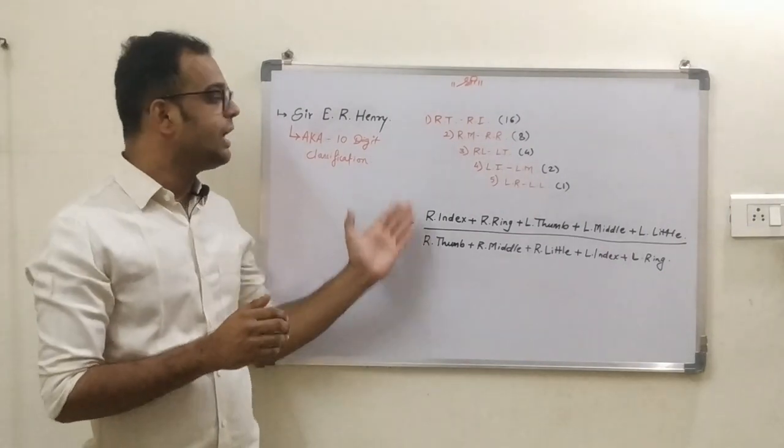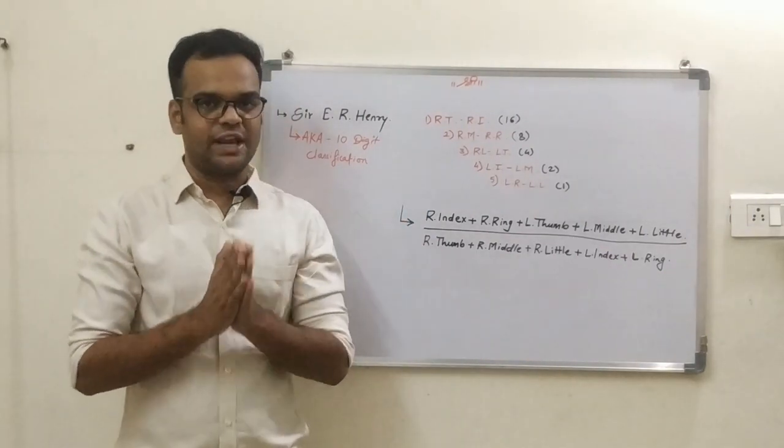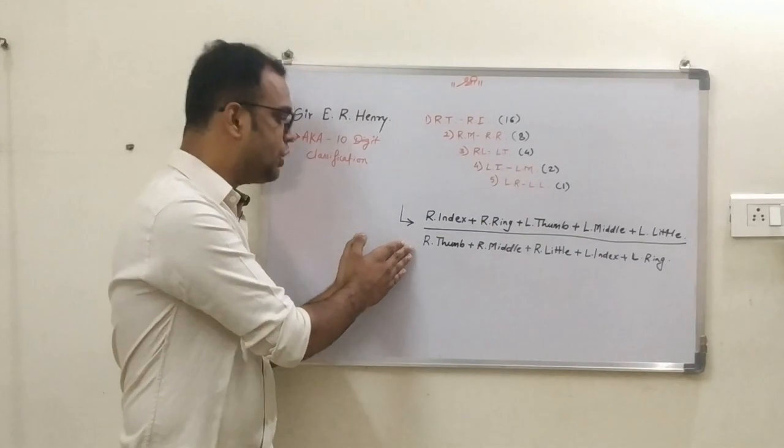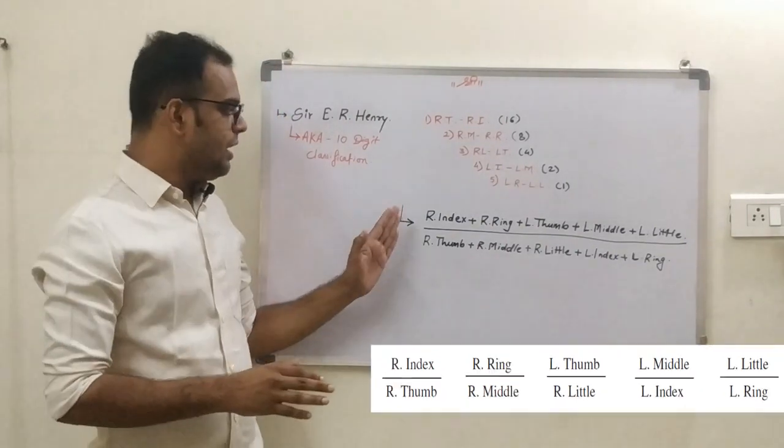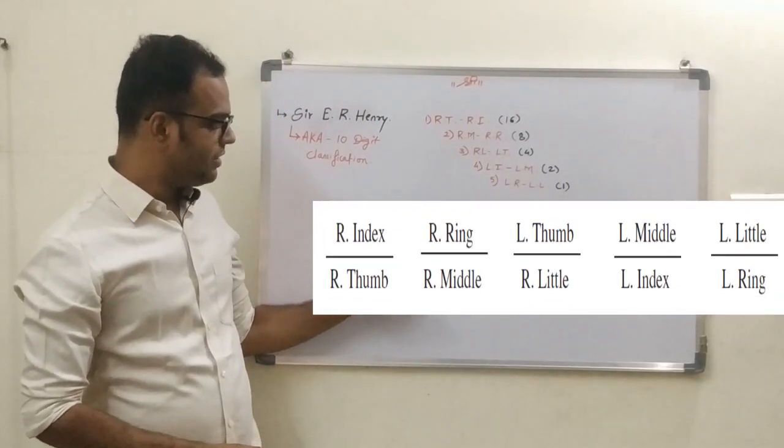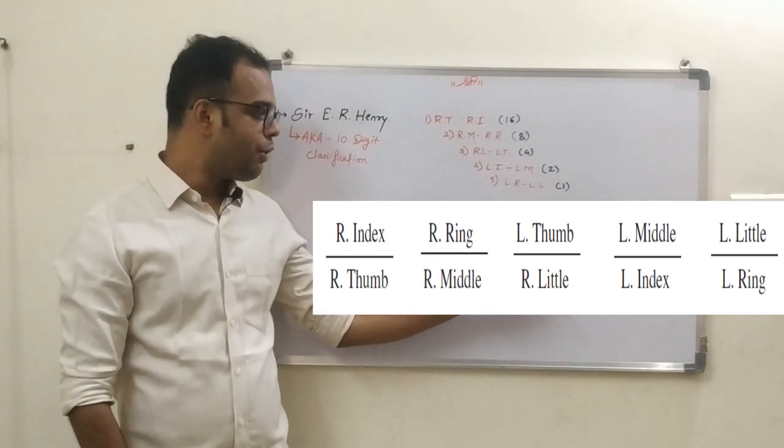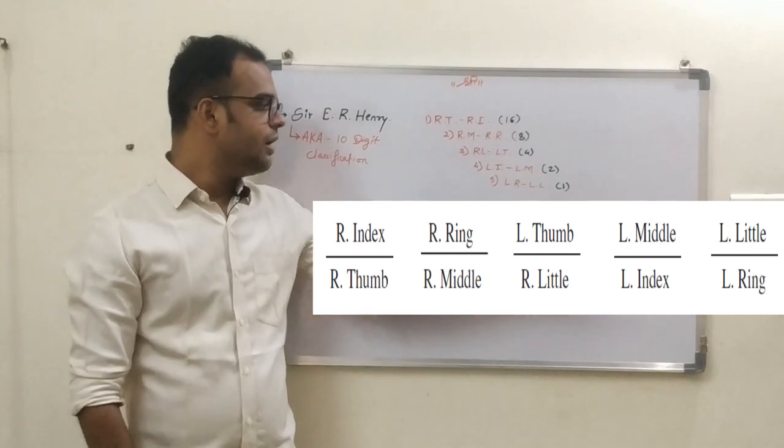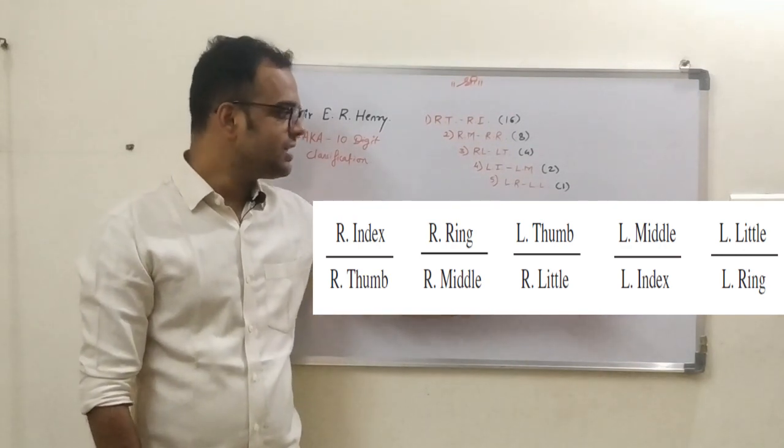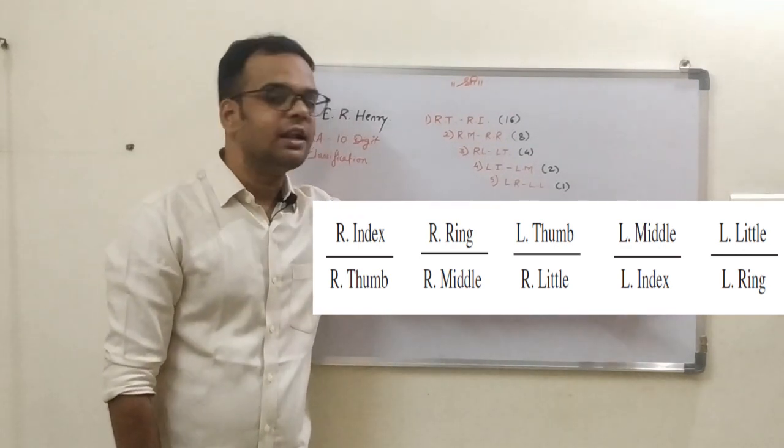Now we have to keep one finger in the numerator of the fraction and the other one is in the denominator of the fraction like this: right index upon right thumb, right ring upon right middle, left thumb upon right little, left middle upon left index, and left little upon left ring.